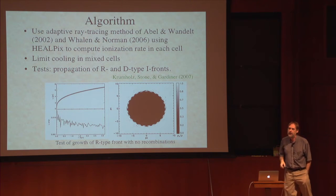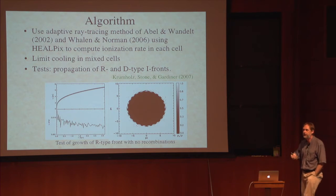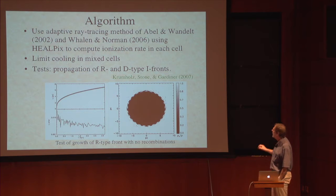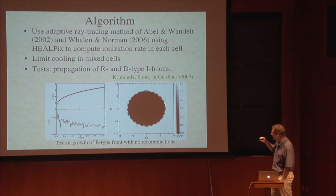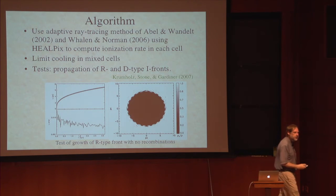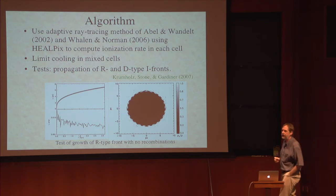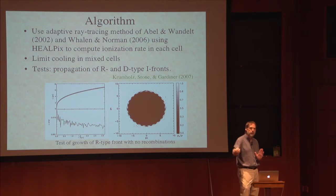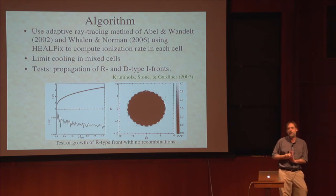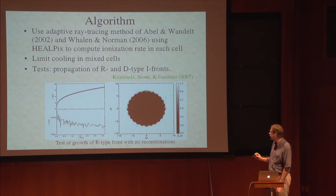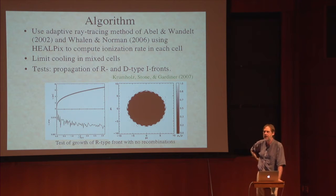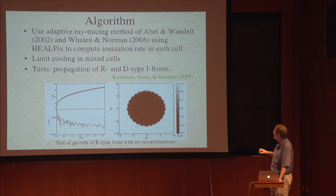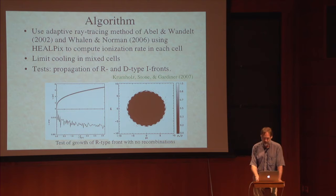There are well-developed techniques using adaptive ray-tracing methods from Abel and Wandelt, and Whalen and Norman. They use the HEALPix library to discretize the sphere and create rays from every point source to every grid cell — this is basically what most people use now. Tests include following the propagation of ionization fronts in uniform media. The challenge is parallelizing this because with domain decomposition, some domains have nothing to do until photons arrive from other domains — load balancing is quite a challenge, and there's been quite a lot of recent work on this.